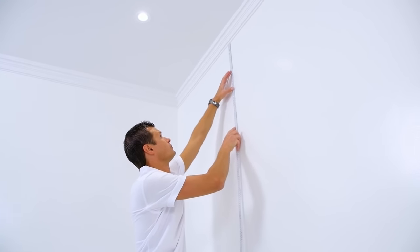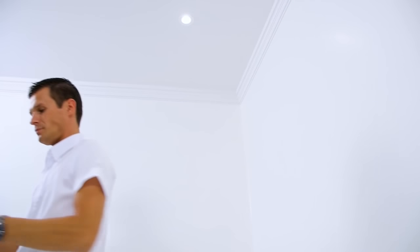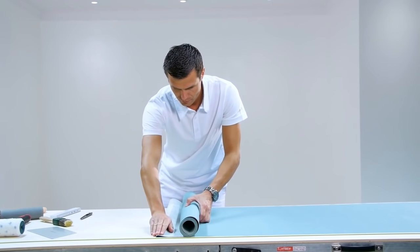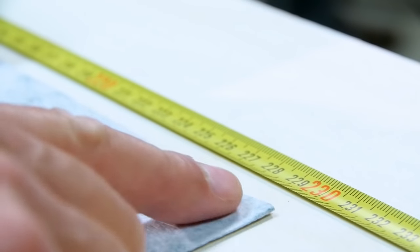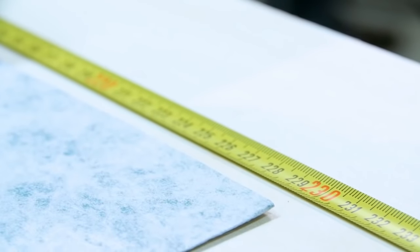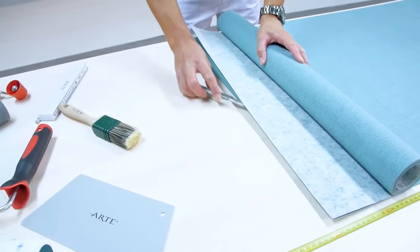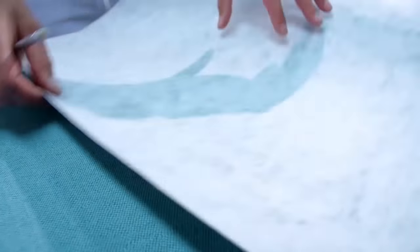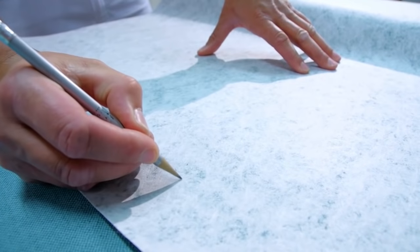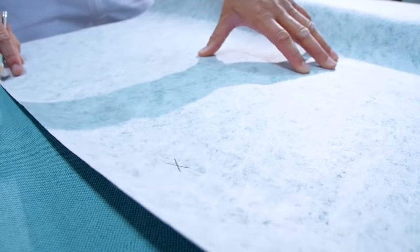Measure the height of the wall. Allow a few extra cm and cut the necessary strips to length. Always mark the top edge of the strip. All strips must be hung in the same direction, unless the instructions state otherwise.